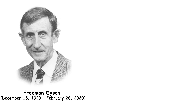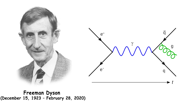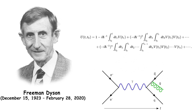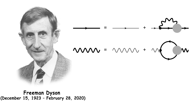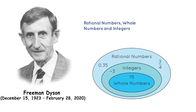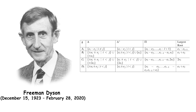Freeman Dyson was a British-American theoretical physicist and mathematician celebrated for his work in quantum electrodynamics, particularly the Dyson series and Dyson-Schwinger equations, which provided a framework for understanding the interactions of particles. Dyson also made significant contributions to number theory, random matrices, and the study of infinite-dimensional Lie algebras, influencing both mathematics and theoretical physics.